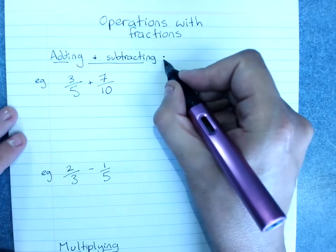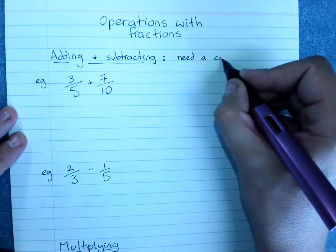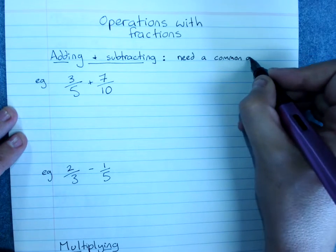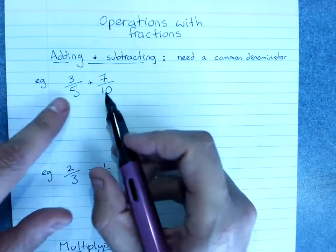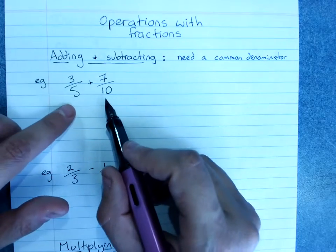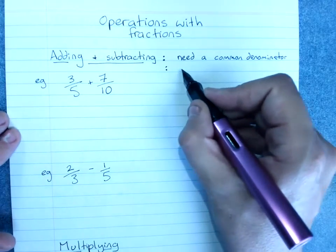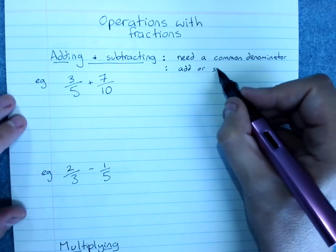When we're adding and subtracting we need a common denominator. That means we need the number on the bottom of the fraction to be the same on each of them and then we just add or subtract, depending on what we're doing, the numerators.